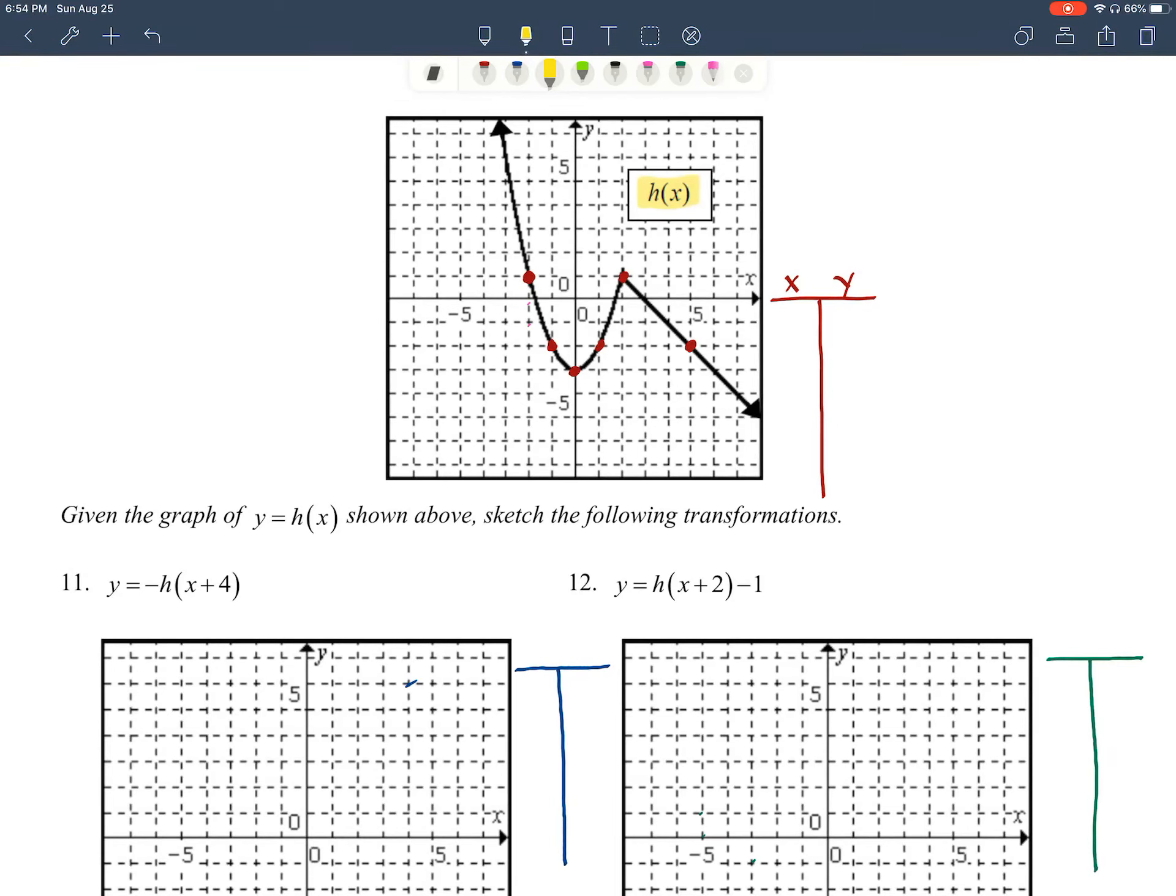All right, next part of the review. We have given the graph of y equals h of x shown above, sketch the following transformations. So before we get into actually sketching the transformations, let's look here at our h of x above. We've got kind of a parabola shape, and then it turns into kind of more of a line with a negative slope there. Now we need to make sure we mark our critical points that we're going to use to help transform our graph.